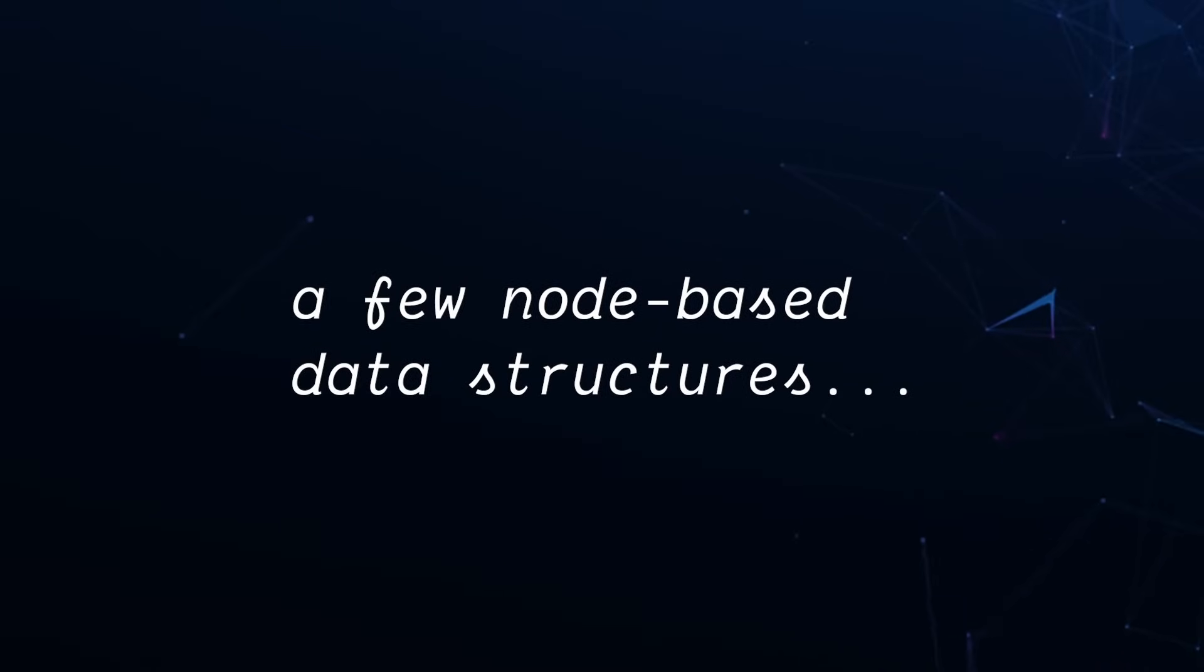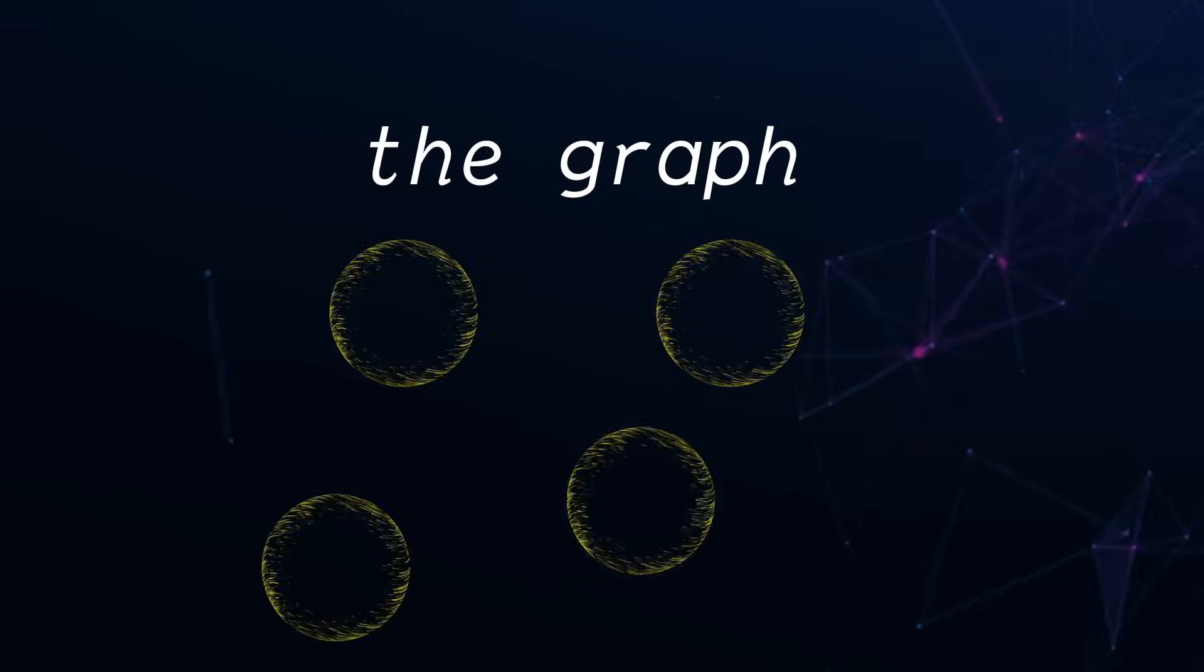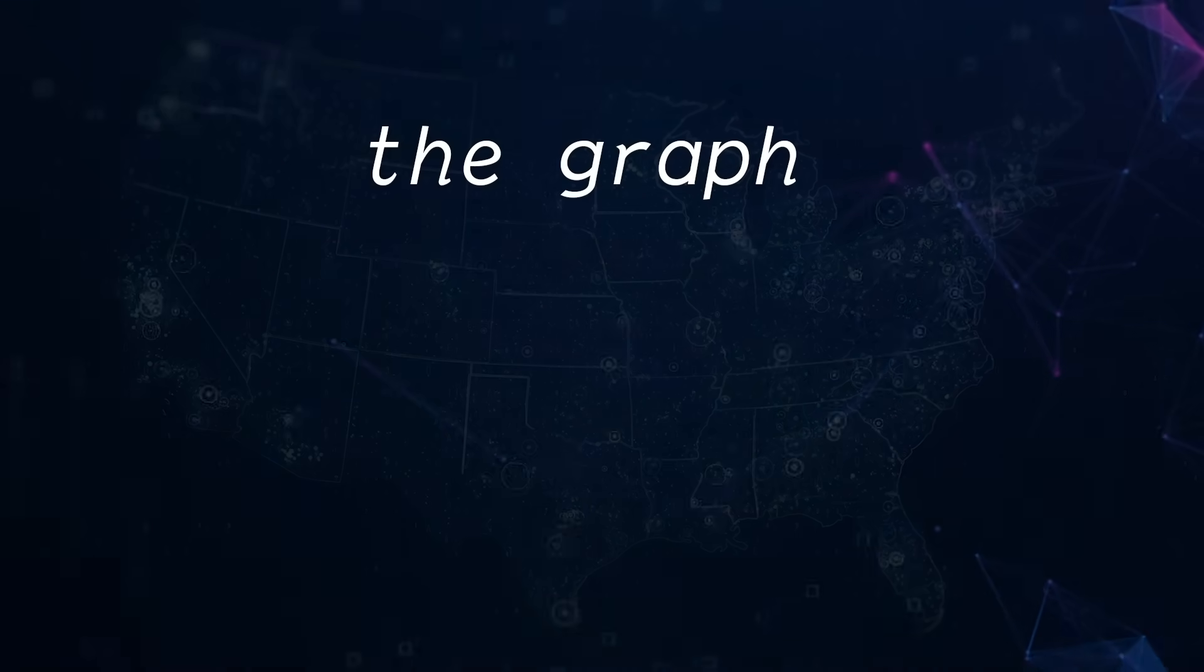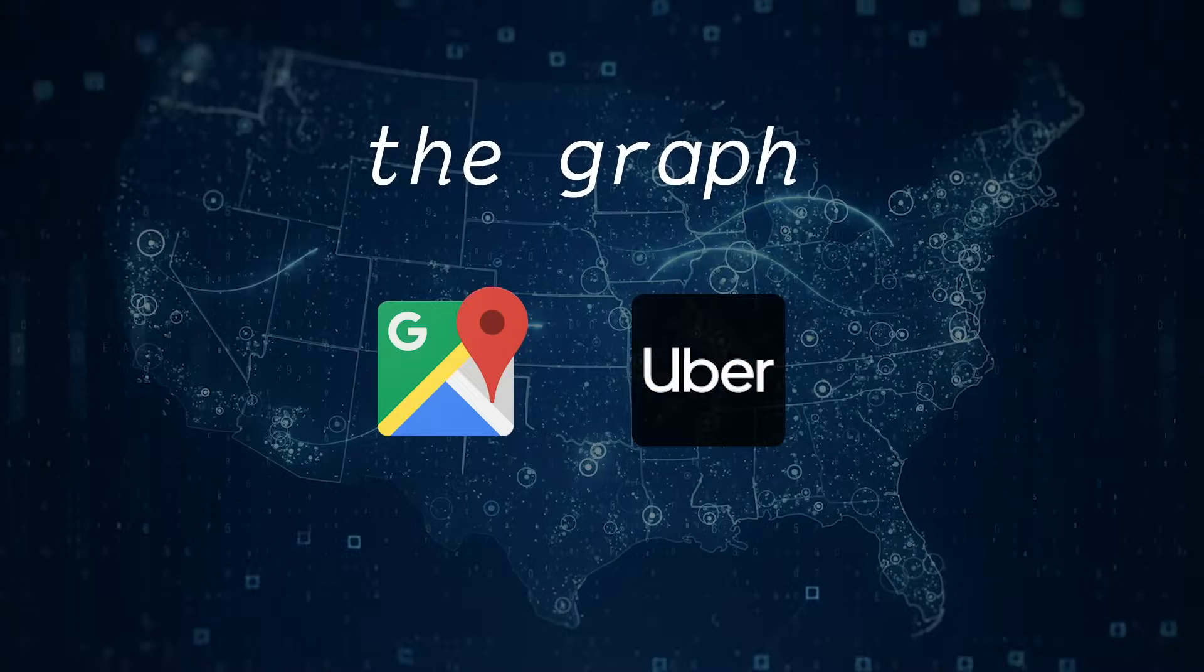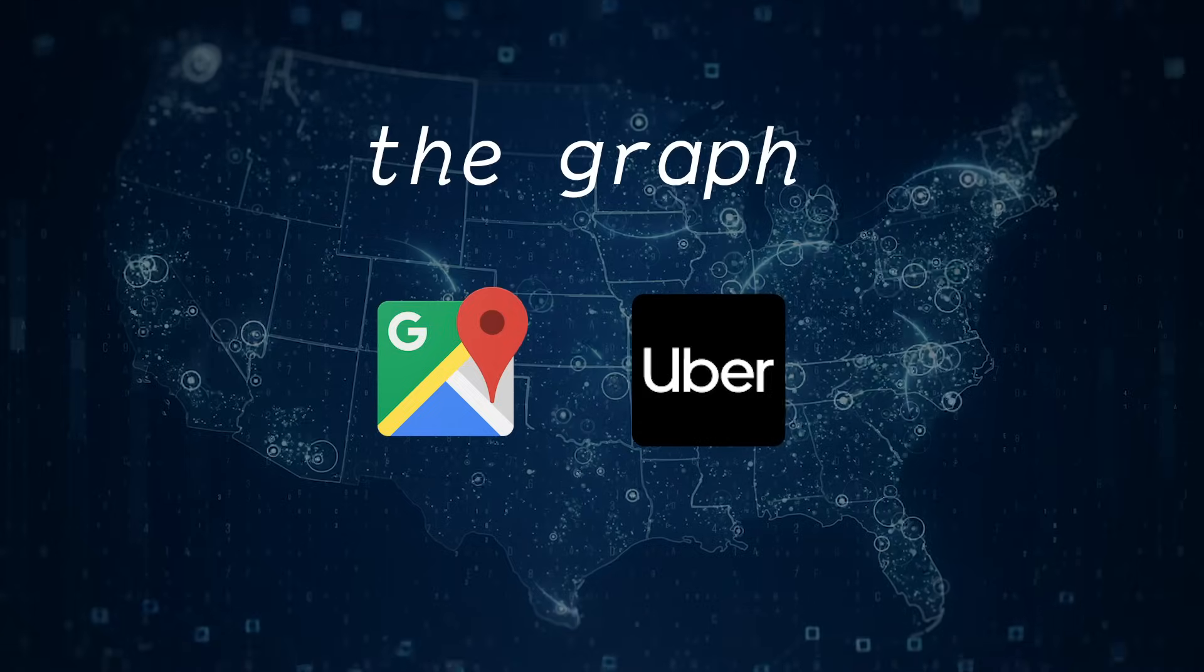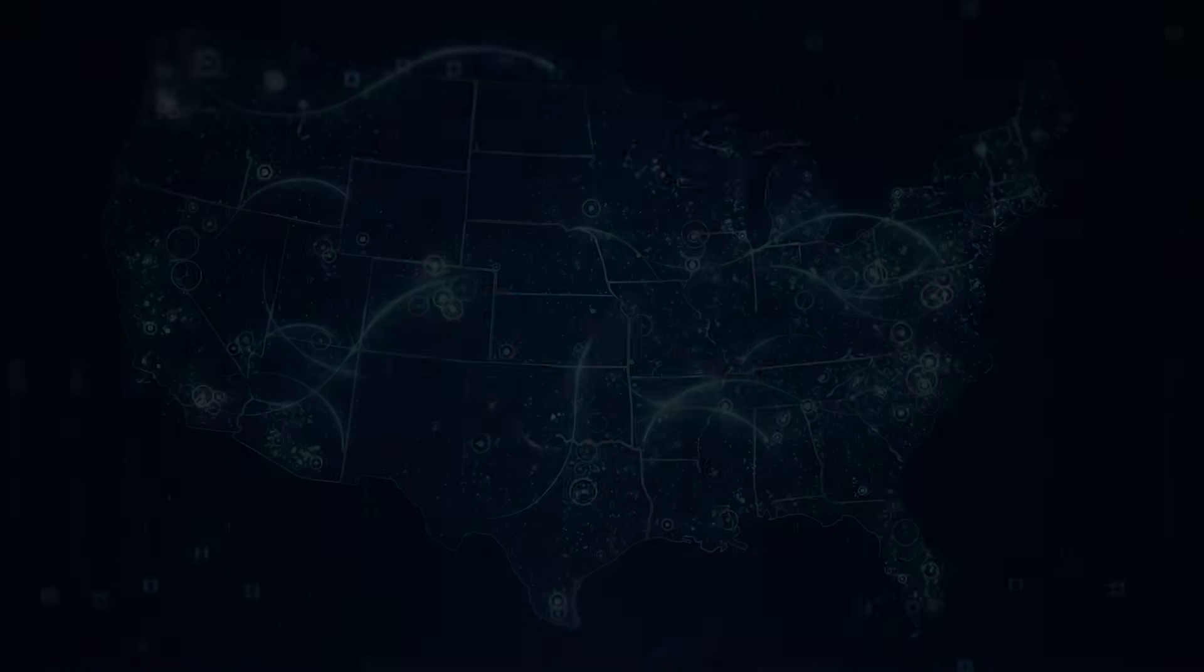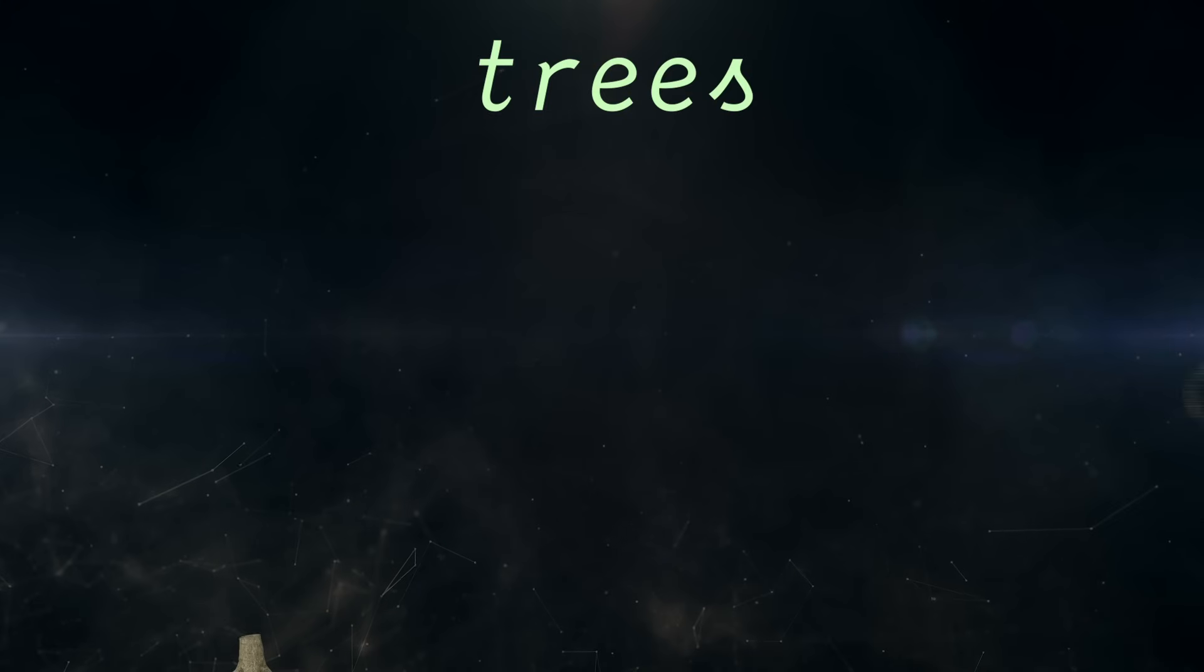Within the broad category of node-based data structures, we have everything from graphs, which can represent cities and the paths between them. Taking this a step further, we can think of getting from point A to B in any navigation service as following a pointer from node A to node B. And then we also have trees, which are different because they're hierarchical.